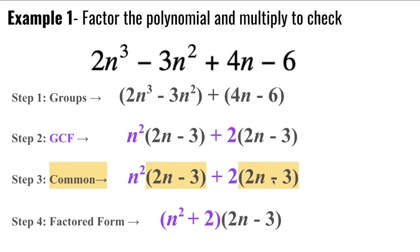This is essentially double distribute in reverse. And here we have the factored form of this polynomial. Now, as always, we do need to multiply to check. So if I were to use double distribute here, n squared times 2n is 2n cubed.